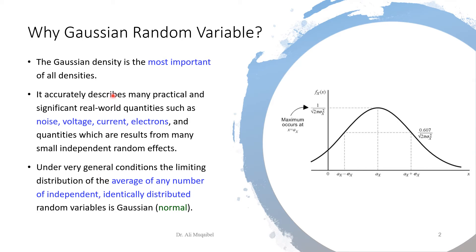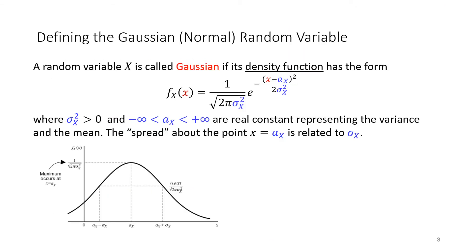This point will become clearer as we get to the central limit theorem. Now that we have seen the importance of the Gaussian or normal random variable, it's time to see how it is defined. When do we call it Gaussian? We'll start with the math.